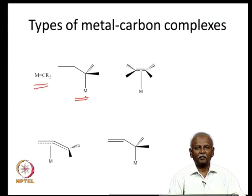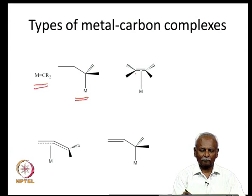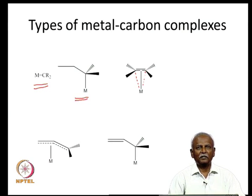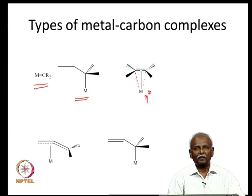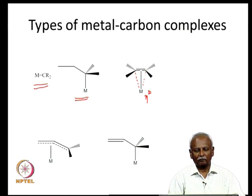We also talked about metal olefin complexes, where 2 carbons are interacting equally with the metal atom. Although we do not indicate these interactions specifically, you can see that these are molecules in which 2 carbons are bonded to the metal. We write them with hapticity 2 and indicate it with eta 2. This eta 2 symbol indicates that 2 carbon atoms of the ligand are interacting with the metal atom.